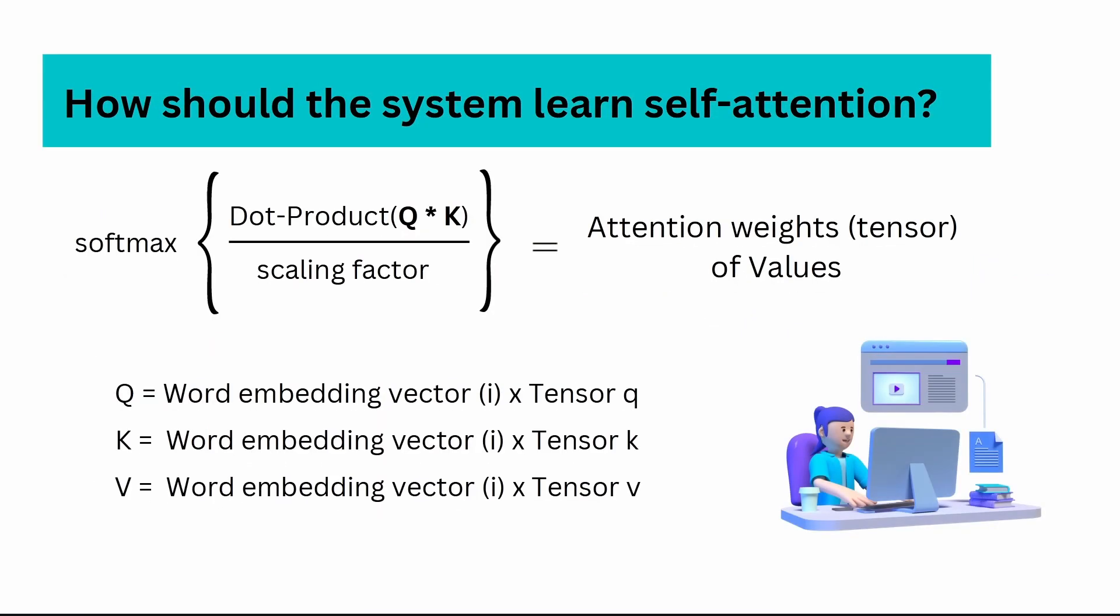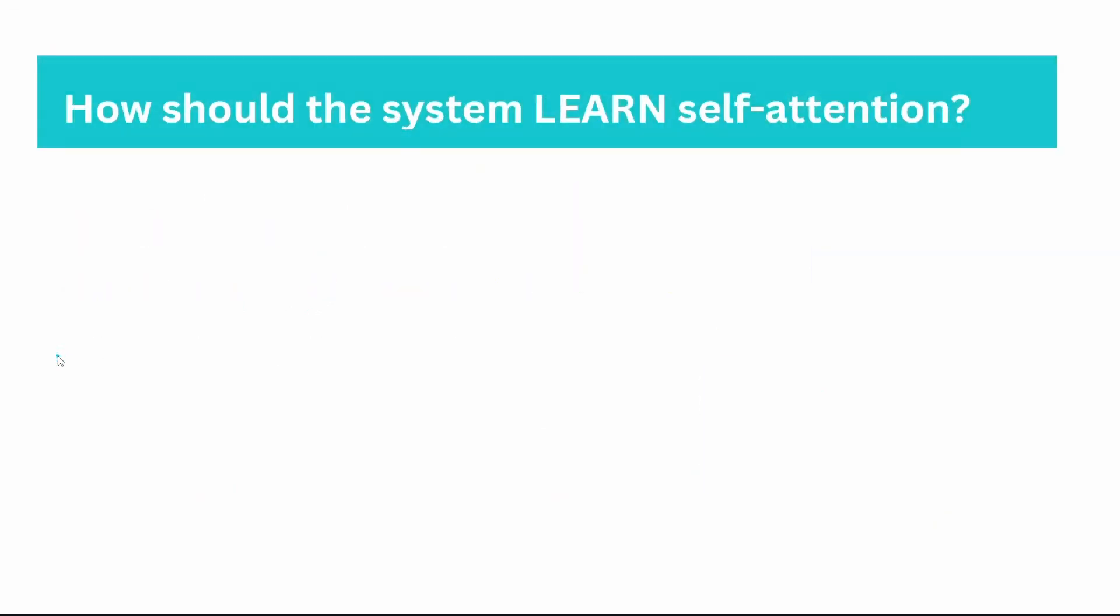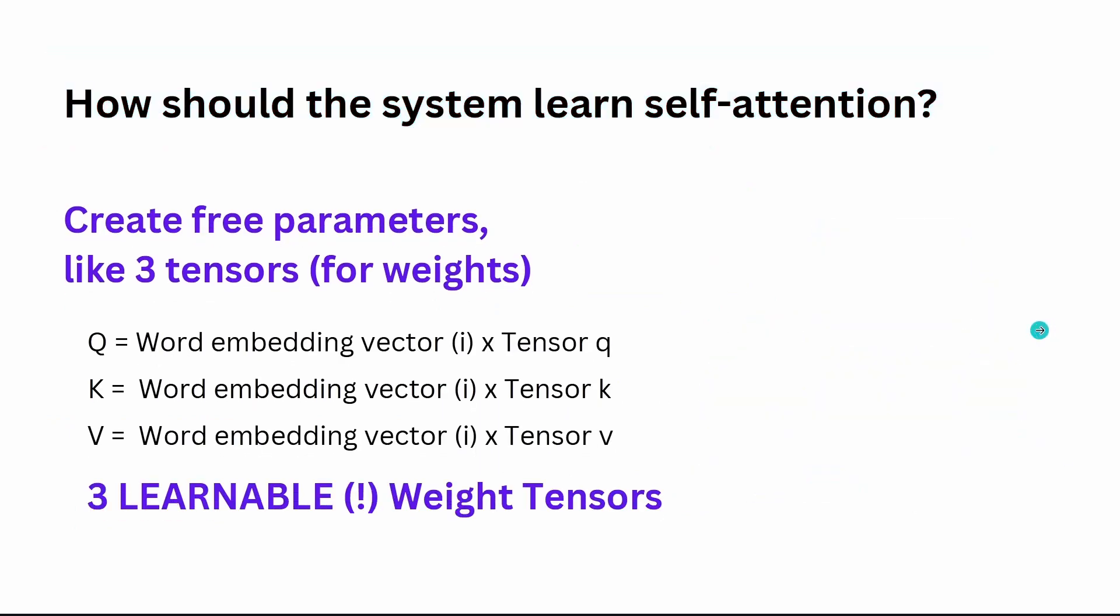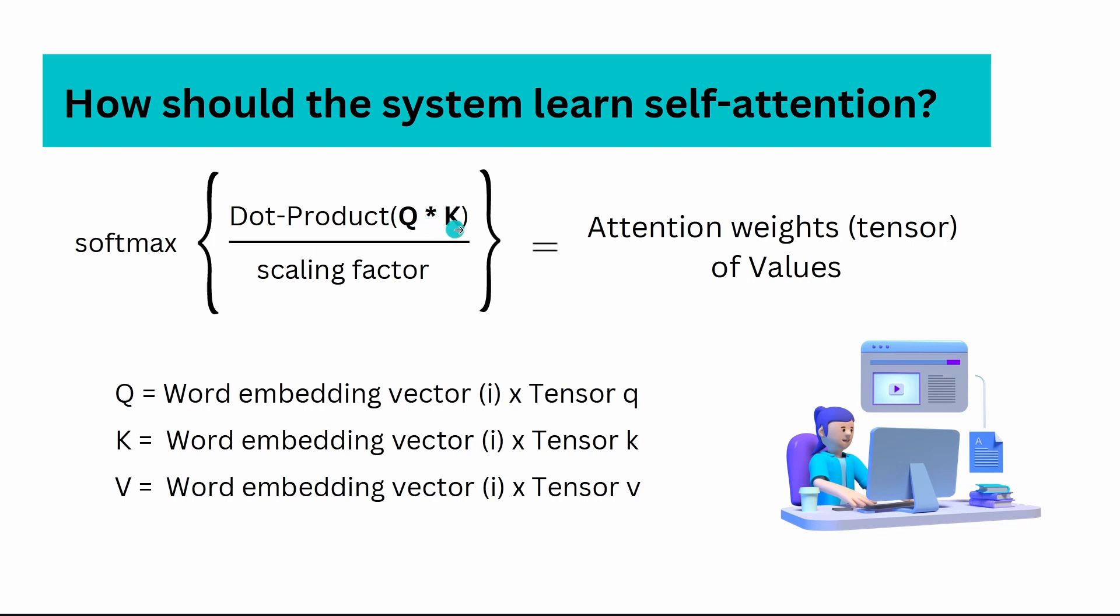But which algorithm should I use? The answer is easy. Exactly like we've done before. The dot product of Q times K. When it yields a high similarity, we can unlock the values. We have the dot product of Q times K, some tensors in the interplay. Then we divide this by a simple scaling factor, some dimensionality factor we need for nice gradients. Then we want to have a softmax functionality so that everything is between zero and one and it adds up to one.